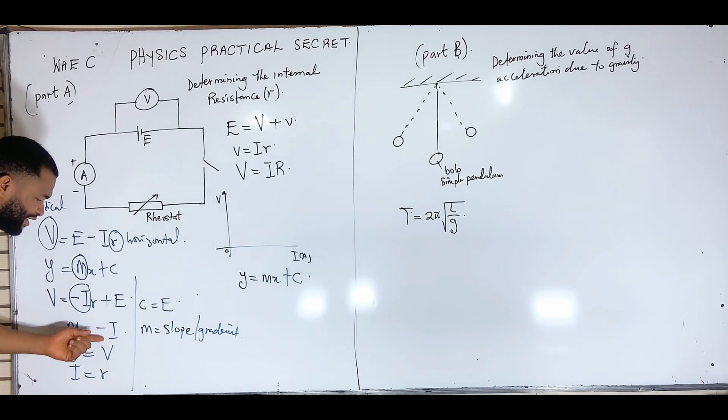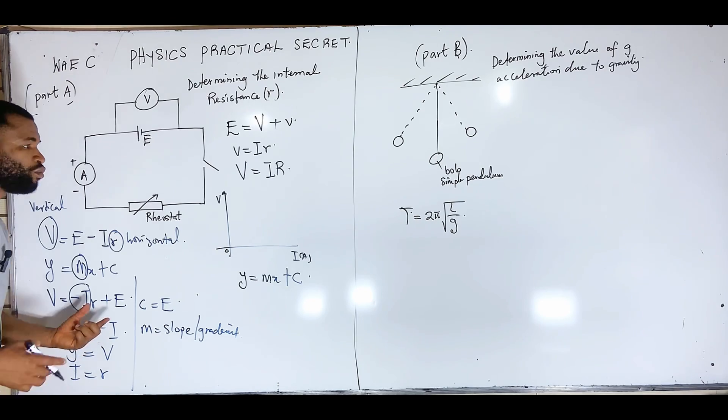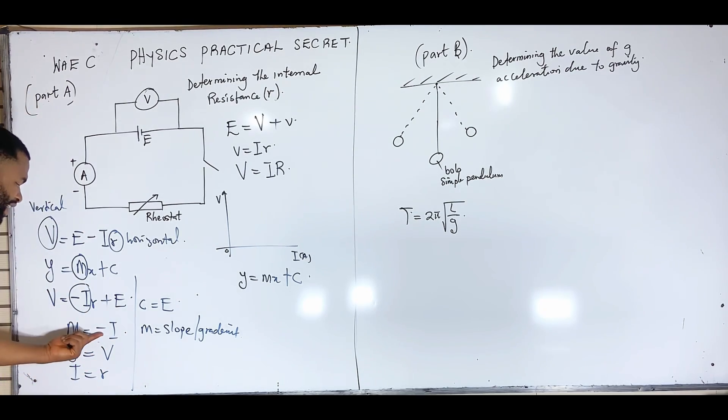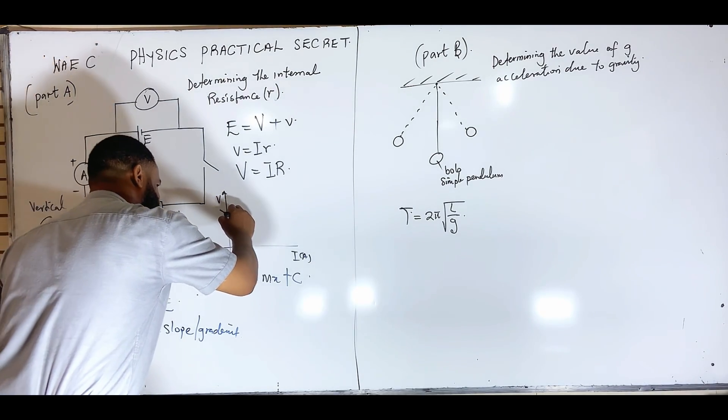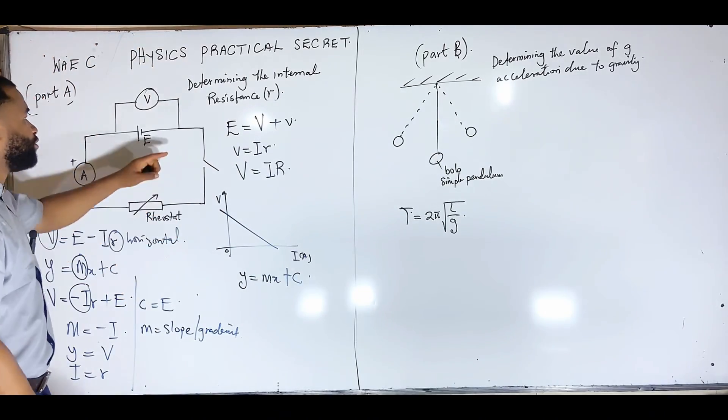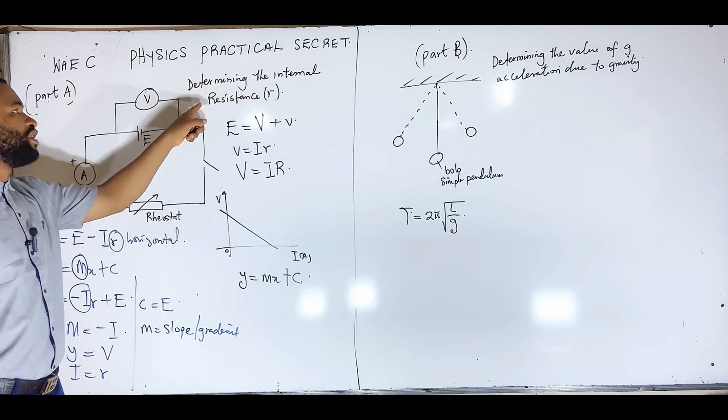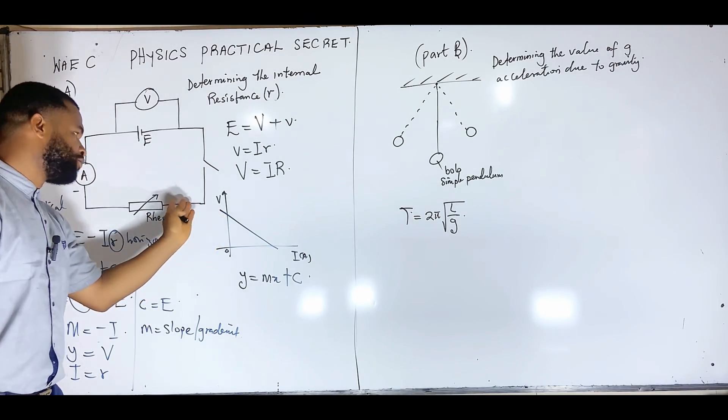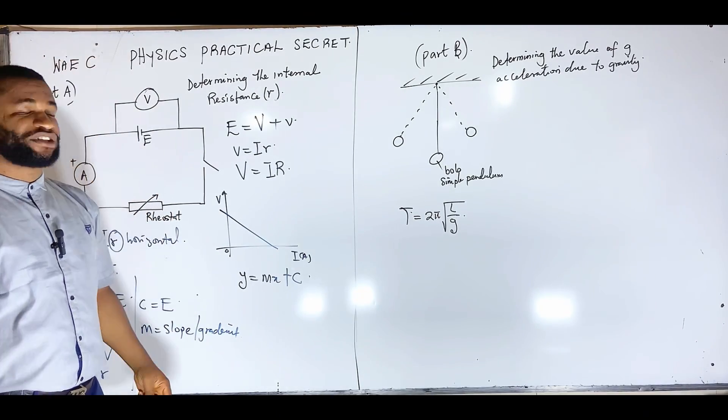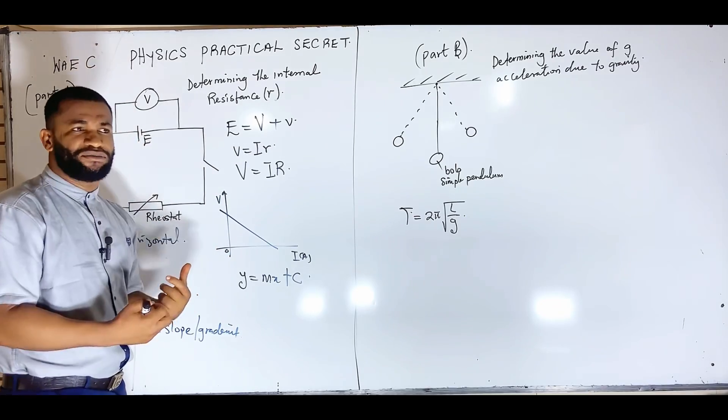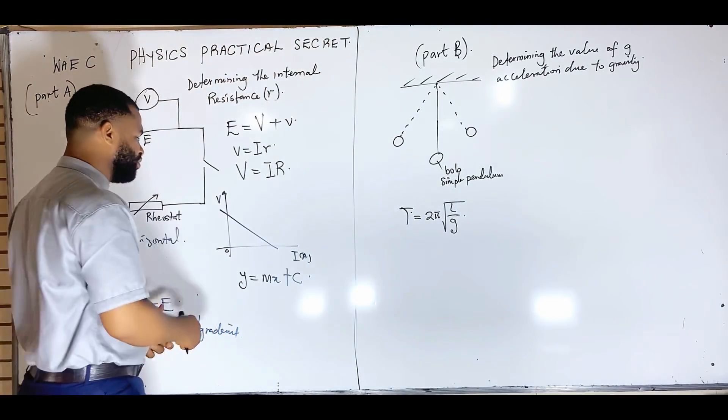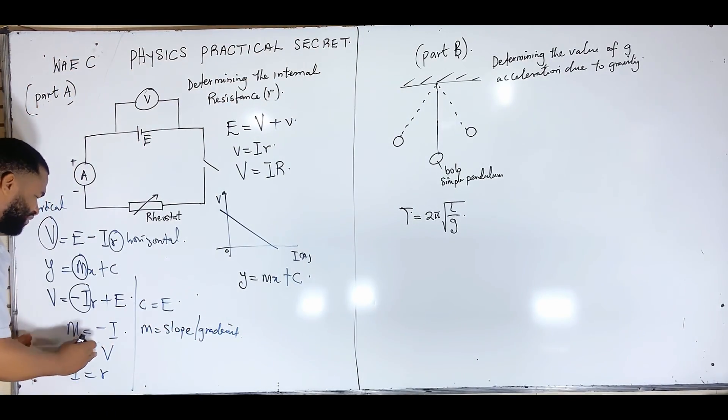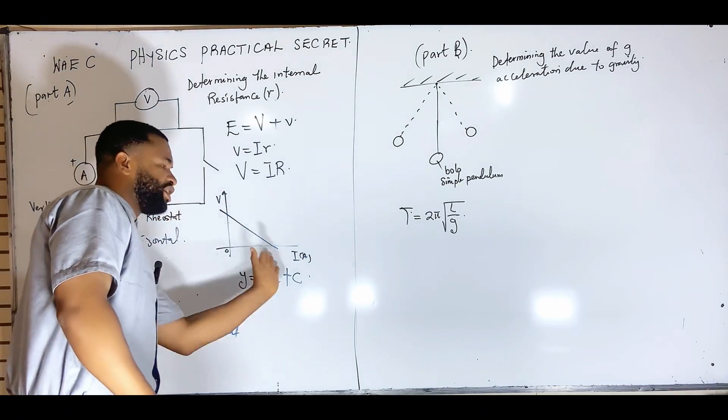M represents slope or gradient of any graph, of any equation. But this gradient is negative. What kind of graph will give you a negative gradient? How would the graph look like? Whenever we have a negative gradient, that means the graph is going this way. So whenever I do this experiment, I'm going to have a graph moving in this direction.